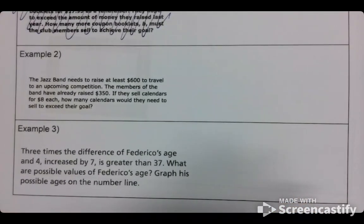So the jazz band is needing to raise at least $600 to travel to an upcoming competition. The members of the band have already raised $350. If they sell calendars for $8 each, how many calendars would they need to sell to exceed their goal?